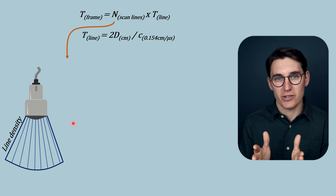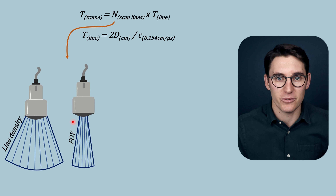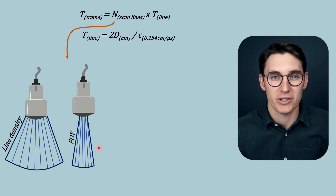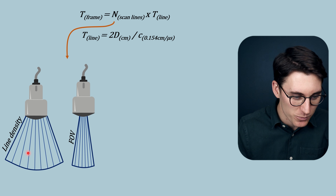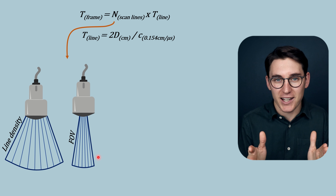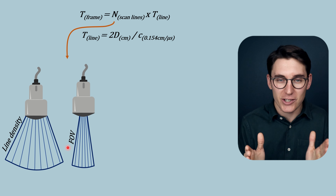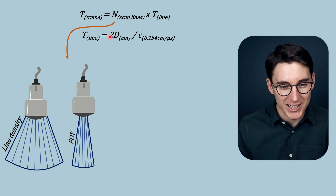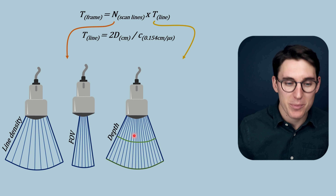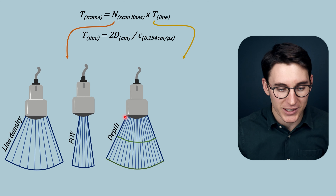If we don't want to sacrifice lateral resolution, we can reduce the number of scan lines by narrowing the field of view. Our line density remains the same, but we've reduced the total number of scan lines by narrowing the field of view. For example, if scanning a kidney with a cyst in one small region, we could narrow down the field of view — effectively reducing scan lines, giving a quicker frame rate and better temporal resolution. Additionally, reducing depth reduces the time to acquire a single A-line; halving the depth doubles the frame rate.